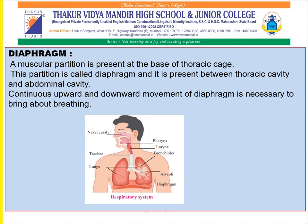The muscular partition present at the base of the thoracic cage, between the thoracic cavity and the abdominal cavity, is called the diaphragm. The continuous upward and downward movement of the diaphragm is necessary to bring about breathing. You can see the picture of the respiratory system, which includes all the parts: the nasal cavity, pharynx, larynx, bronchi, trachea, lungs, alveoli, and the diaphragm.